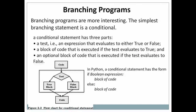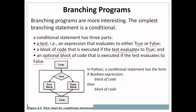A conditional statement has three parts: a test, which is an expression that evaluates to either true or false; a block of code that is executed if the test evaluates to true — that is the true block; and an optional block of code that is executed if the test evaluates to false — that is the false block.